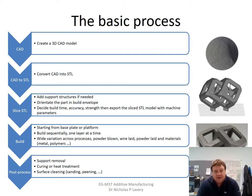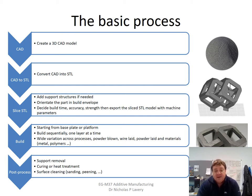The sliced STL model is then exported to the machine in a way the machine can understand it, and we start the build — starting from a base plate or platform, building upwards sequentially one layer at a time. This is where there is a departure between different additive processes. Depending on the materials or feedstock you're using, you can have blown powder, wire being melted and laid in layers, or powder in a bed which is fused. Finally, when the part comes off, there is a series of post-processing steps to achieve the desired quality of the part.